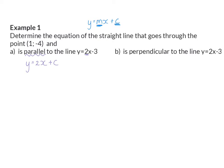For this, we are given an extra coordinate, which means we have another x and y value. So I'm going to substitute the y value of minus 4 and the x value of 1 into my equation, and solve c by saying minus 4 minus 2 is minus 6. That means that the equation of line A is y equals 2x minus 6.